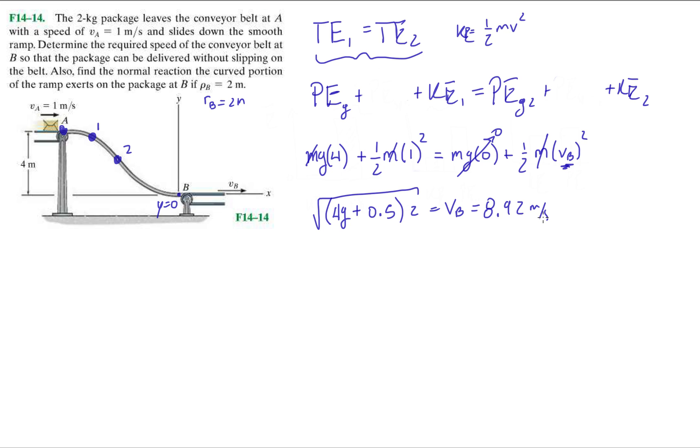Let me double check that calculation. Times 2. Yeah, 8.92-ish or 8.915. So that's one thing that we needed. The conveyor belt has to be moving at this velocity to match the velocity of the package coming down. So we have that.